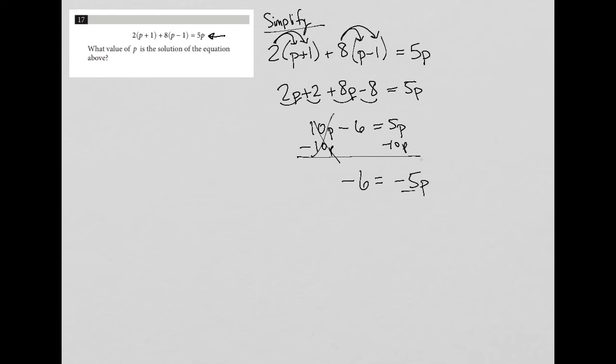And of course I can divide both sides by negative 5, leaving me with positive 6/5 equals p.